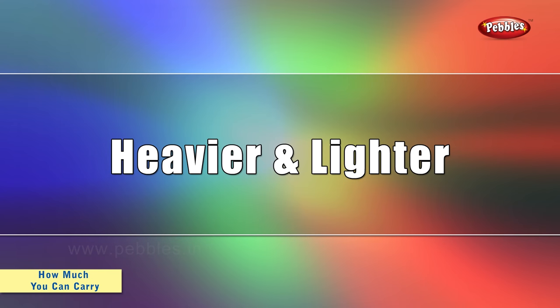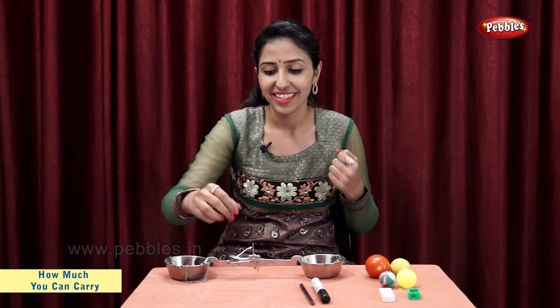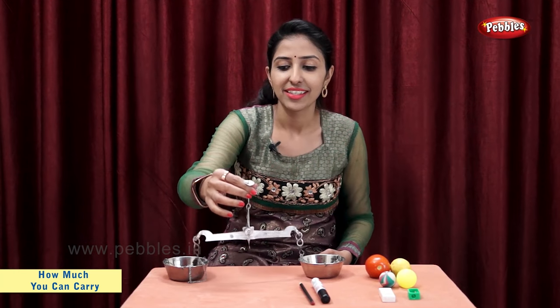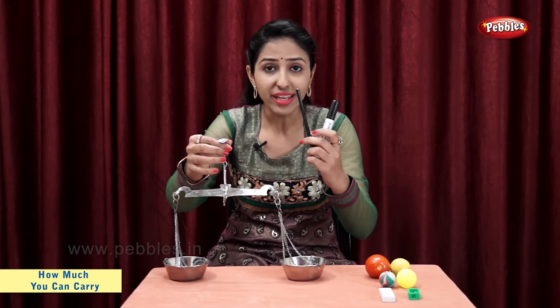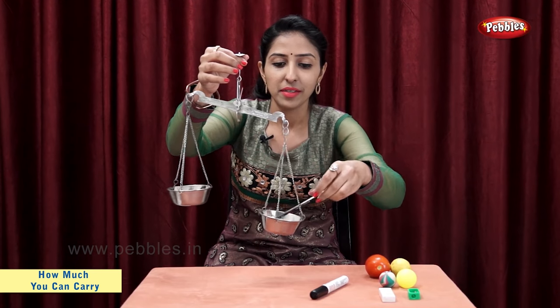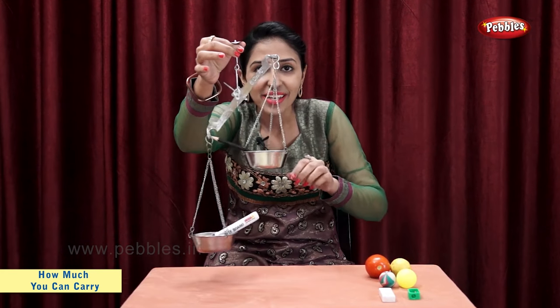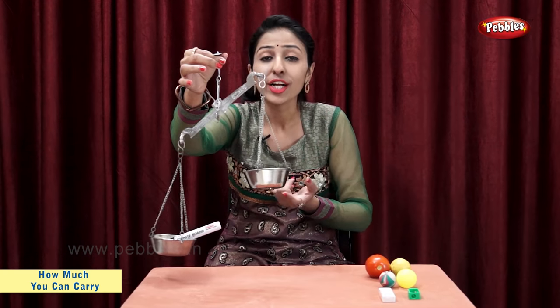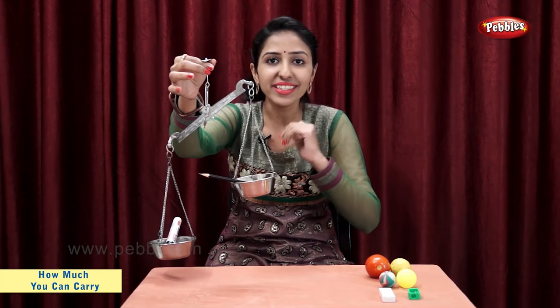Heavier and lighter. Students, now let's see which objects are heavier and which objects are lighter. Let's take pencil and marker. Pencil, marker. So marker is heavier, pencil is lighter.